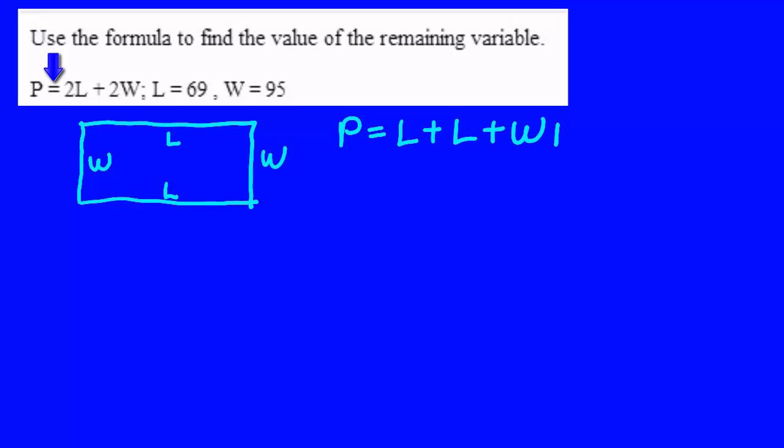You would measure the length and the length and the width and the width, which is where we get the formula P equals 2L plus 2W. Formulas are derived from real life experience and rectangles have two lengths and two widths.